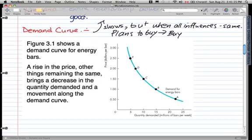Now, I have a graph here that shows the demand curve. And as it says, a rise in price, other things remaining the same, brings a decrease in the quantity demanded and the movement along the demand curve. So that's kind of logical because when the price rises, say the price rises from 150 to 250, so right here, 150 to 250.